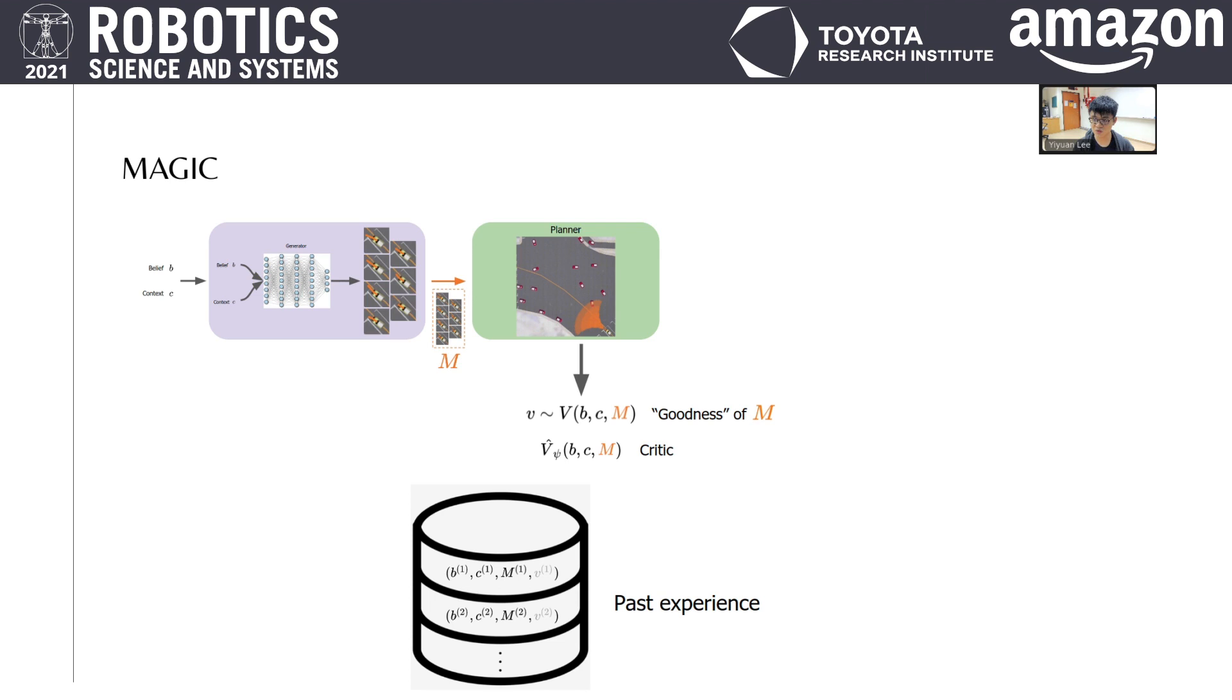After training the critique with past experience, the critique is used as a differentiable surrogate objective, allowing gradients to flow through to optimize the generator for previously encountered situations. Note that training of the generator absolutely requires the critique, since without the critique, the training gradients will not be able to pass through the non-differentiable planner at all. The training is done completely offline based on past experience, and only the generator is deployed for use with planning online.